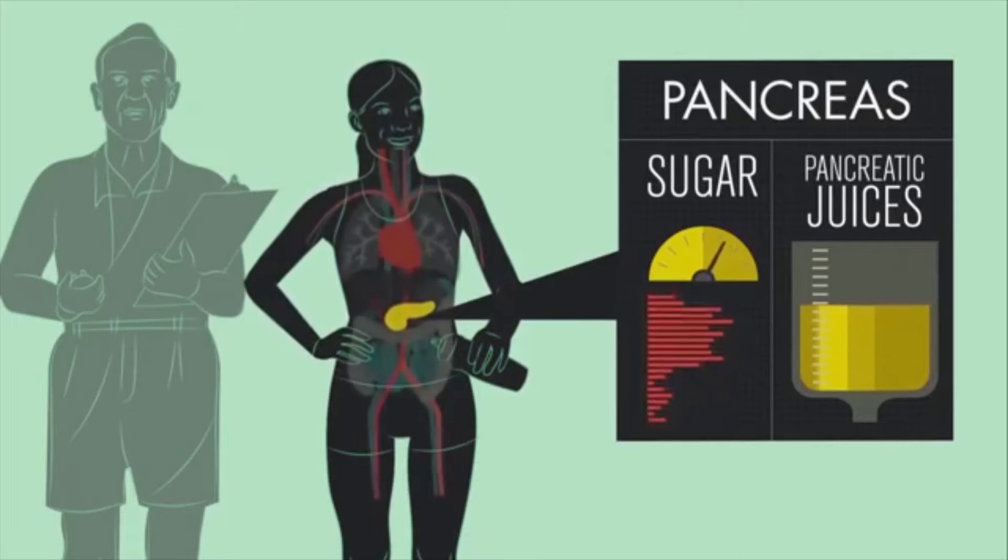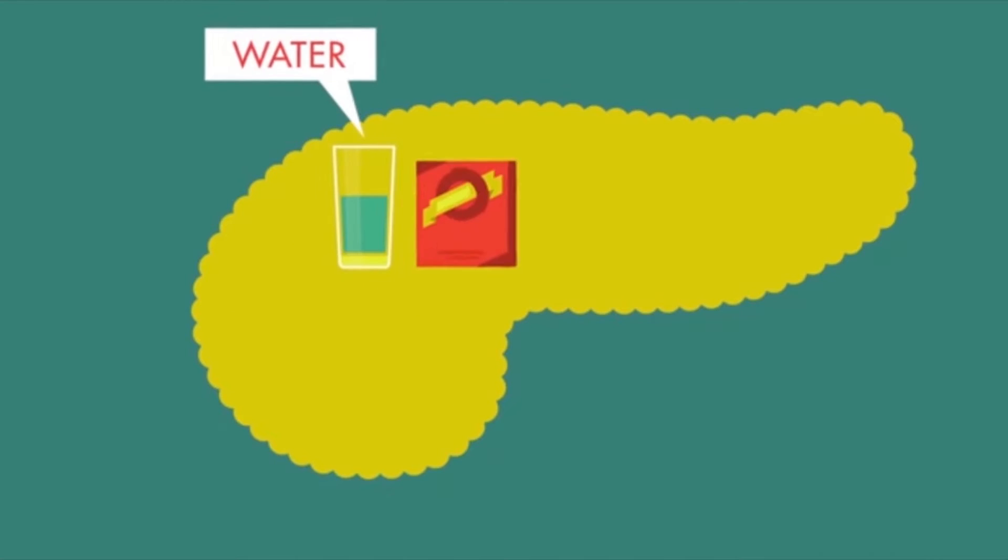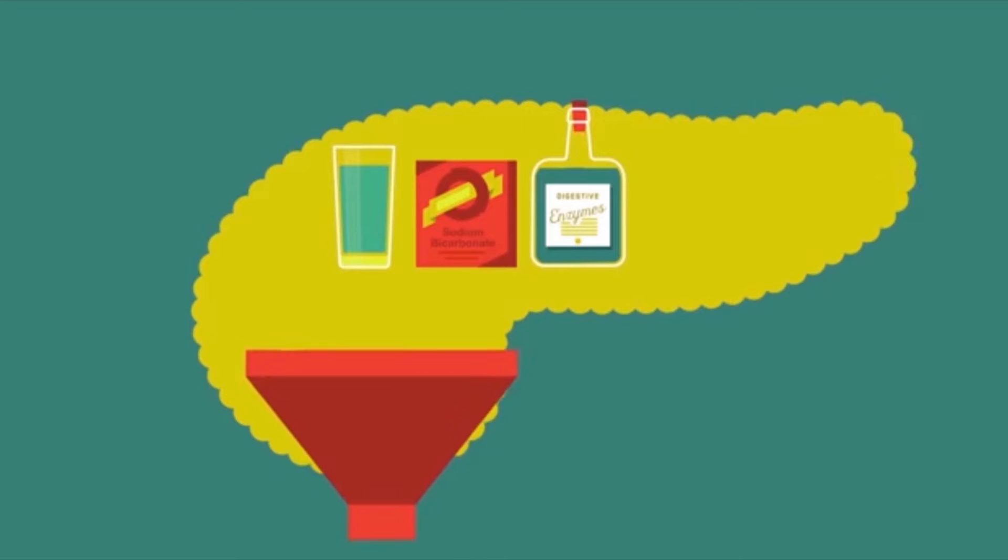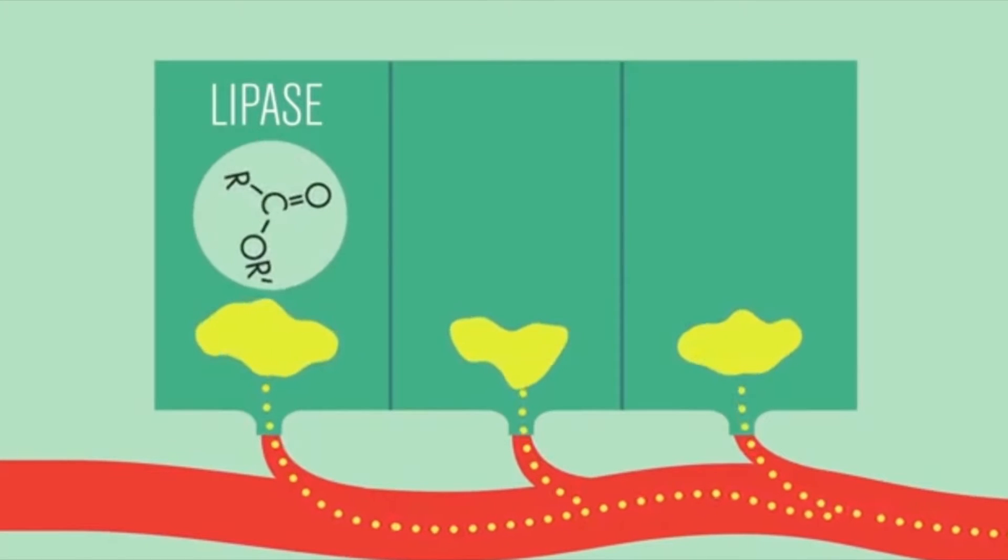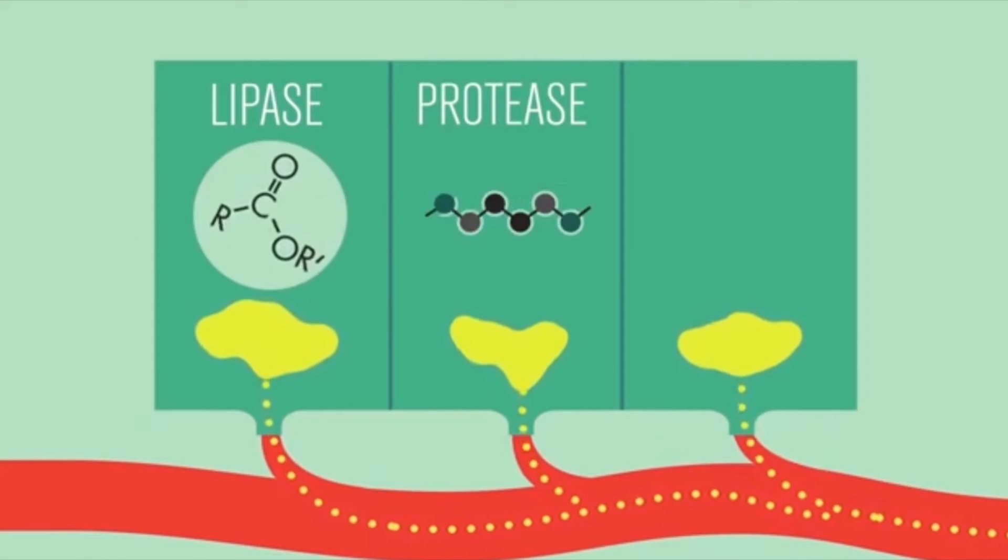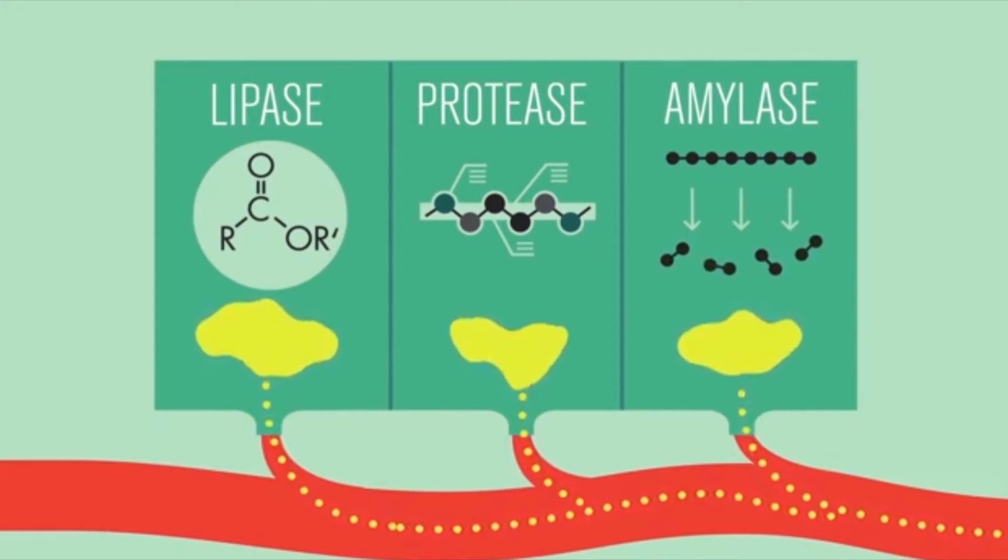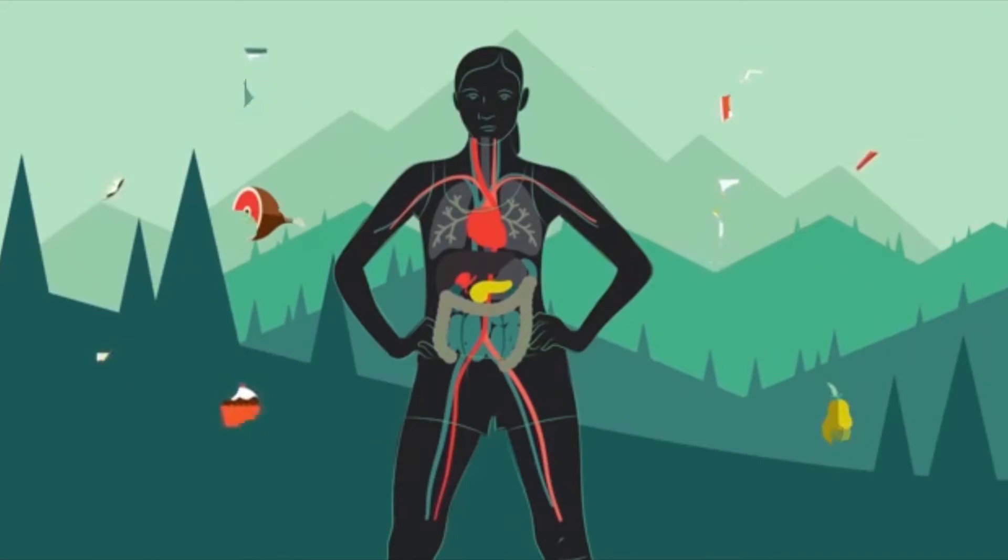Pancreas controls sugar level in the body and produces pancreatic juice made of water, sodium bicarbonate and digestive enzymes for releasing the nutrients from food. The digestive enzymes include lipase for breaking down fat, protease for splitting proteins and amylase for dividing carbohydrates to generate glucose. These nutrients are absorbed into the bloodstream.